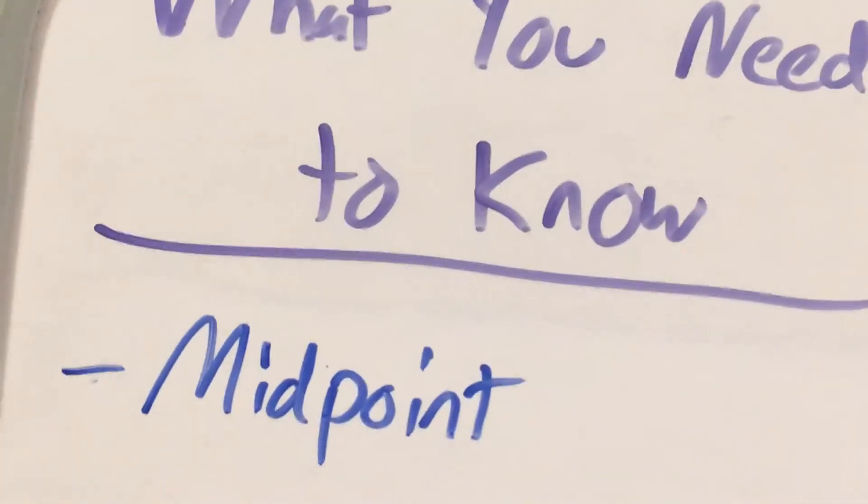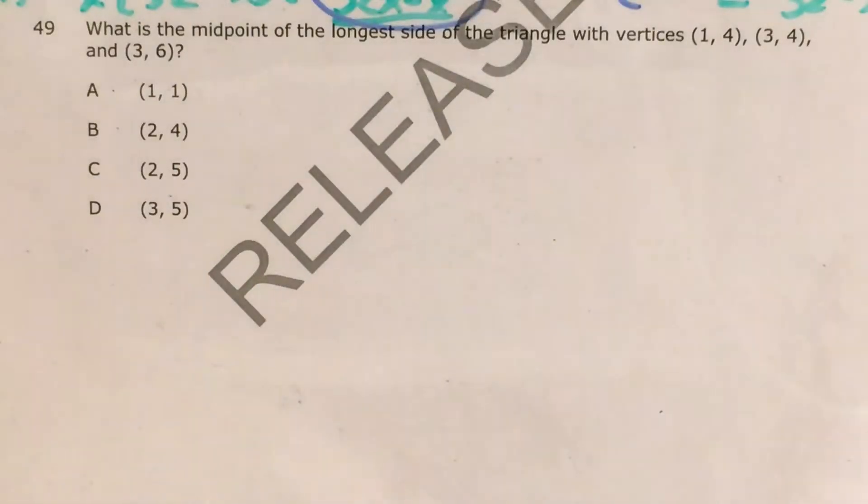What's up math scholars and math haters? This is Mr. W. Today we're going to tackle question 49 in the Math 1 questions that North Carolina released this past school year. The question gives us the coordinates of the three vertices of a triangle and asks us to find the midpoint of the longest side of that triangle. The biggest skill that this is testing is midpoint, and we'll go over how to find that.